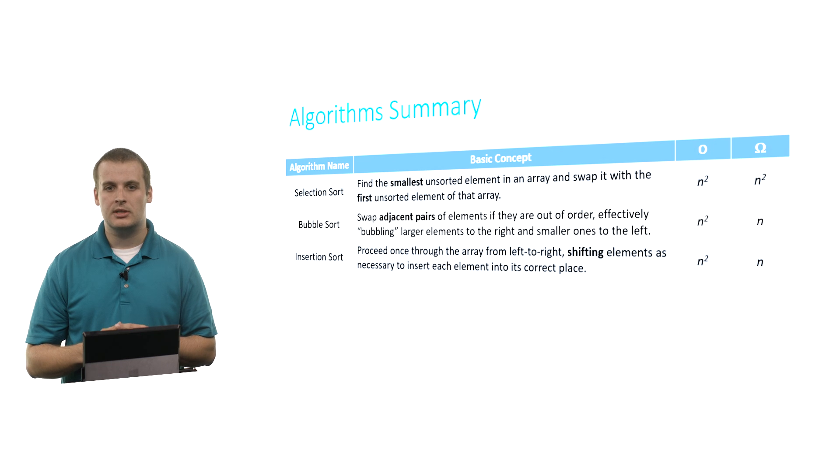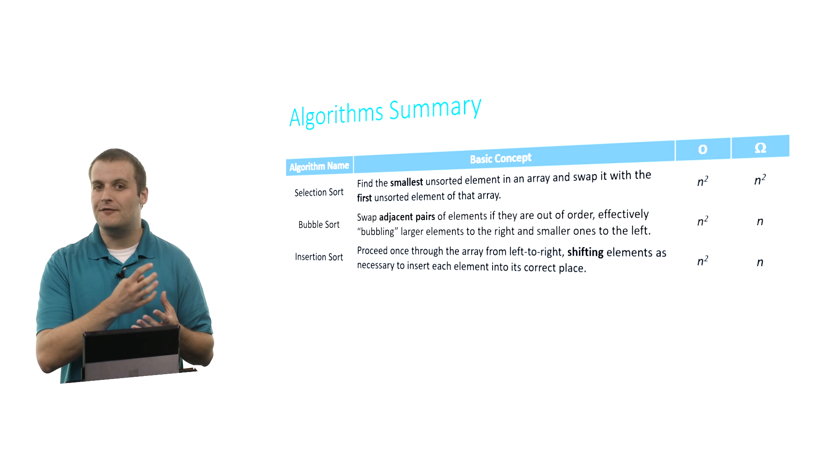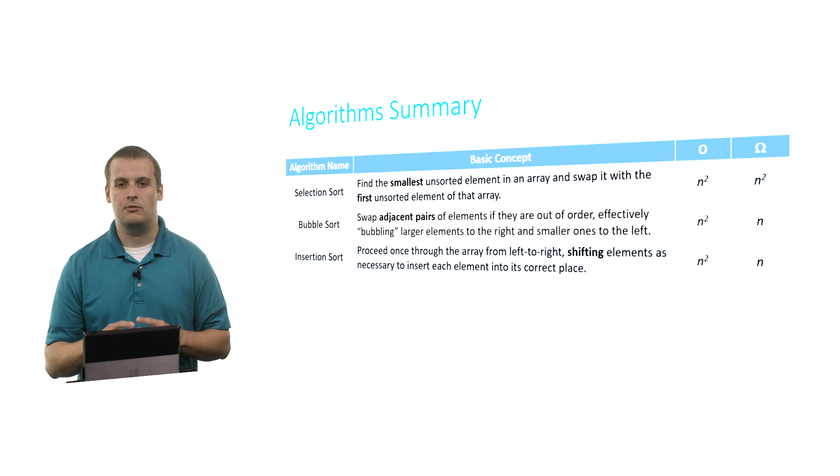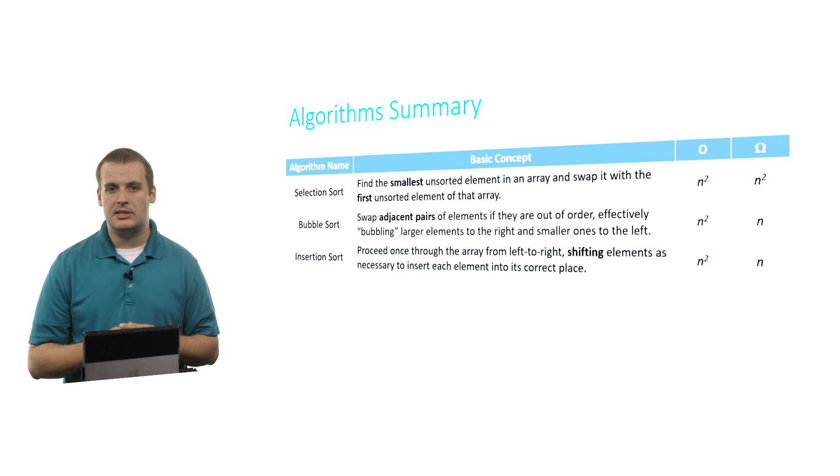In insertion sort, the basic idea here is shifting. That's the key word for insertion sort. We're going to step once through the array from left to right. And as we do, we're going to shift elements we've already seen to make room for smaller ones that need to fit somewhere back in that sorted portion. So we build the sorted array one element at a time left to right. And we shift things to make room. The worst case runtime of insertion sort is n squared. The best case runtime is n.